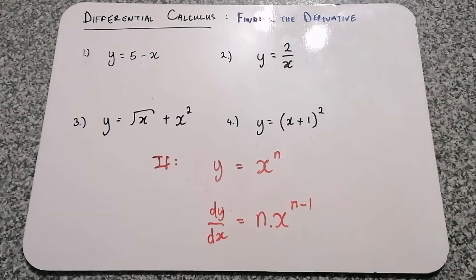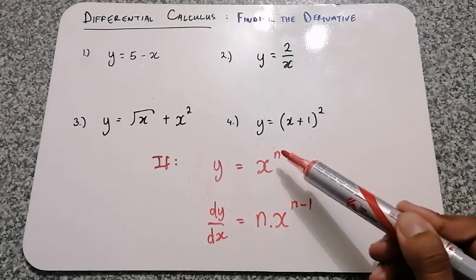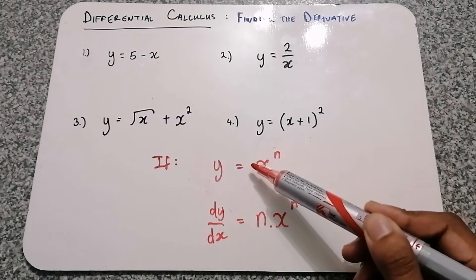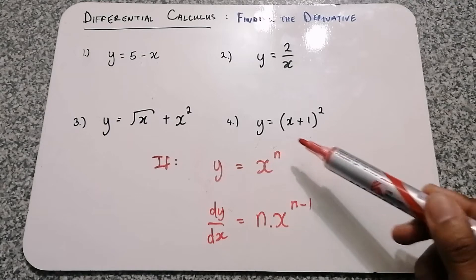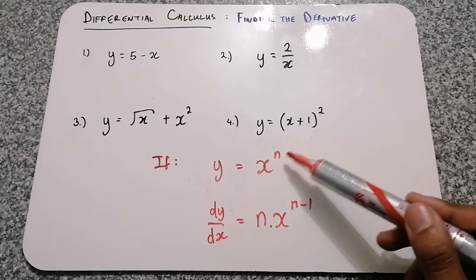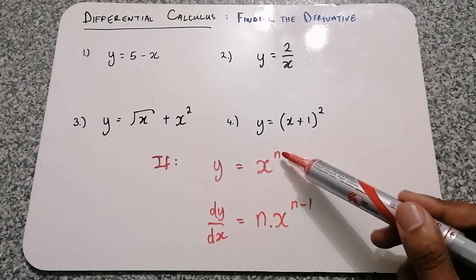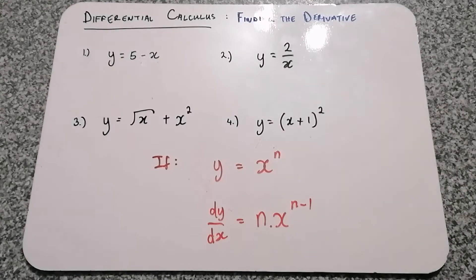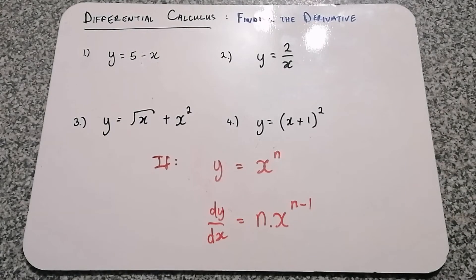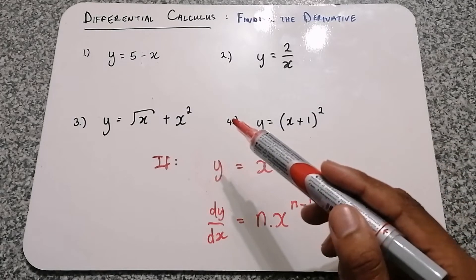So there are two things happening here. First, the n is being multiplied with whatever is in front of that x, and then the exponent n is being decreased by 1. Those are the two steps we need to consider. Now with that, let's tackle these questions.